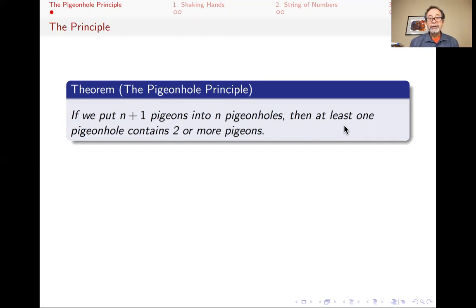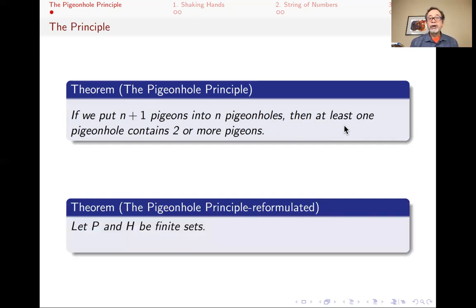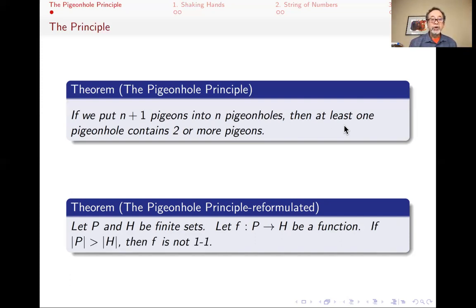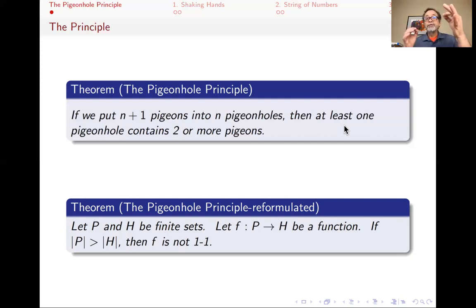We could reword it to make it sound more mathematical by saying: let's say you have two sets P and H. P is the pigeons and H is the holes. If you have a function from P to H — meaning you take an element of P and map it to an element of H, you take one pigeon and put it in a pigeonhole — and if you know that the size of P is greater than the size of H (where the absolute value sign means the cardinality of that set), then the function f is not one-to-one. A map is one-to-one if two different elements always go to different places.